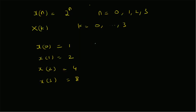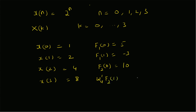To summarize the values at the first stage: f1(0) = 5, f1(1) = −3, f2(0) = 10, and W4^1 × f2(1) = 6j. These are the values at the inputs of stage 2.